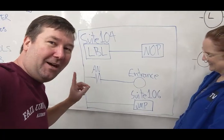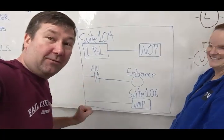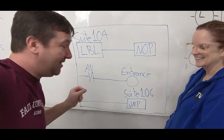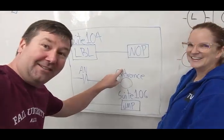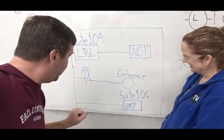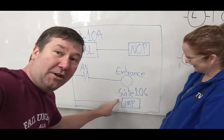And this one tripped a lot of you up, but when we have a go look for zero, we can also spell that out as a not. So not an entrance. Suite 104 is not an entrance. Jump to 106.